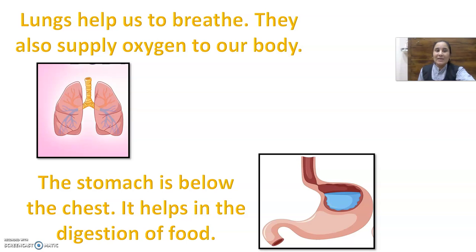Lungs help us to breathe — they help us to take our breath. They also supply oxygen to our body. Stomach — all of us know that it is below the chest. It helps in the digestion of food. What we eat goes into our stomach, and it helps us in digestion. Clear? So these are a few examples of internal organs.